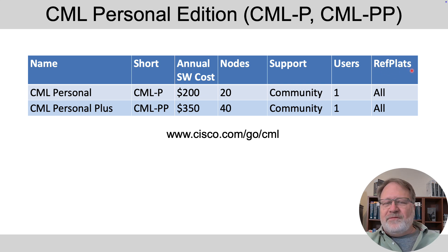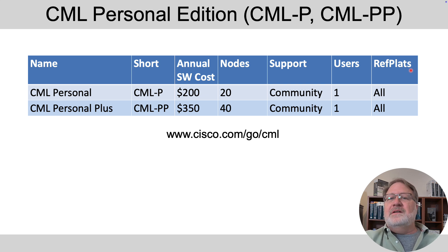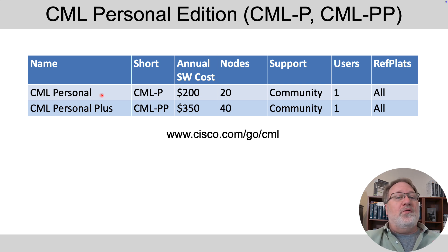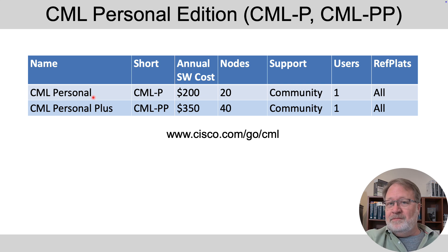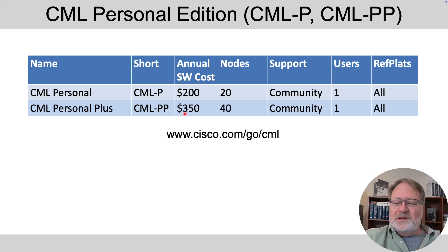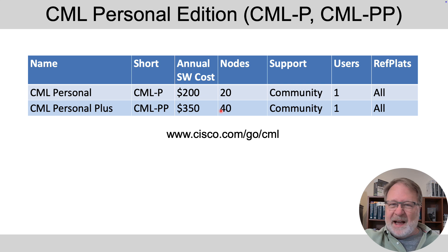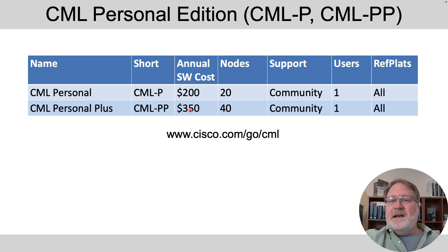The last column says 'refplats' — shorthand for reference platforms, meaning Cisco device operating systems. With CML Personal, all the available operating systems are accessible: several router and switch operating systems and so on. Then Cisco came out with Personal Plus, which for a little more money gave you a few more nodes. That was effective for those going past CCNA, but at this kind of money per year, it made most CCNA candidates shy away. Also, to run that many nodes, a lot of people had to upgrade their hardware.